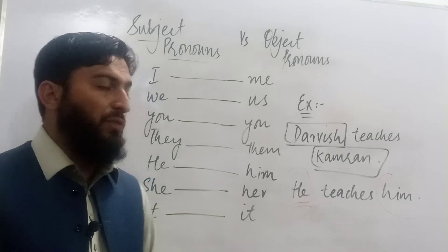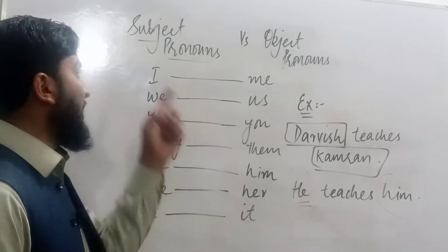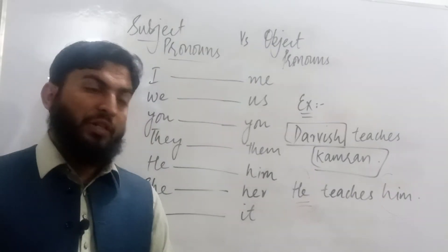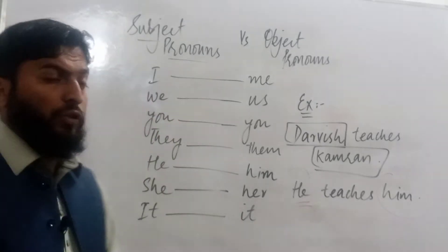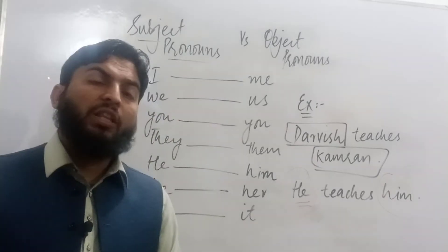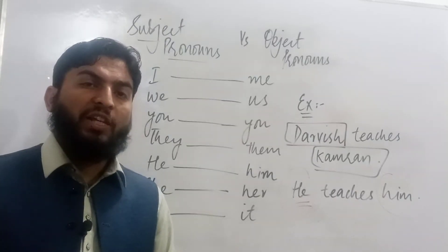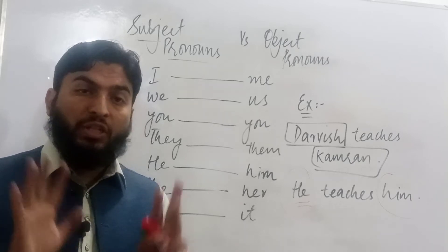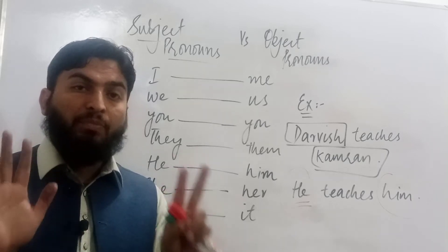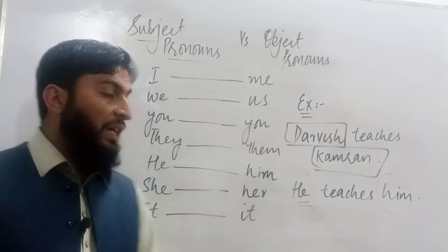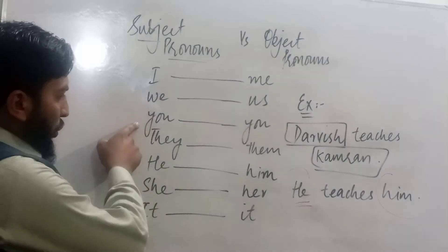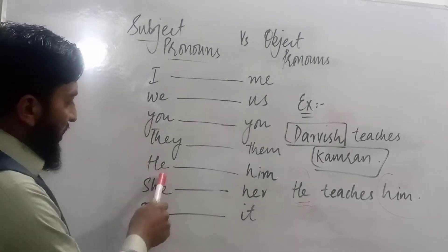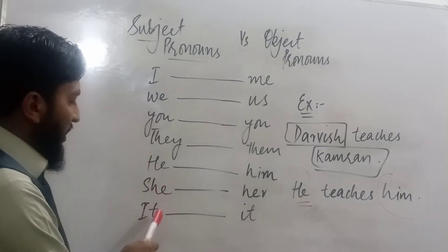Let's show some differences between subject pronouns and object pronouns. Subject pronouns are those pronouns that are used in place of the subject in a sentence. There are seven subject pronouns: I, we, you, they, he, she, it.